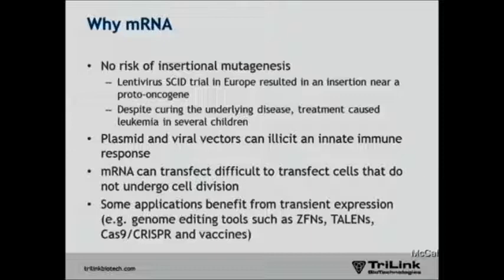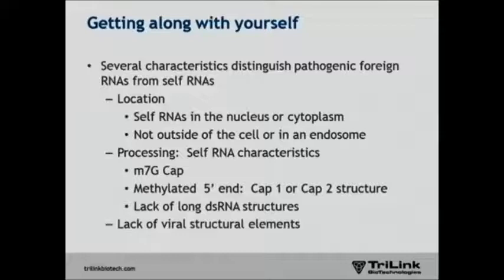Cells that are not rapidly dividing can be difficult to transfect because the plasmid or mRNA gets access to the nucleus during cell division. There are some applications that benefit from short transient expression — for example, genome editing tools such as zinc fingers, TALENs, Cas9 and CRISPR, and also other applications such as vaccines.